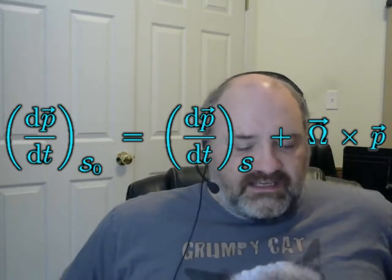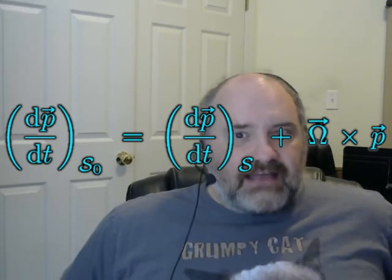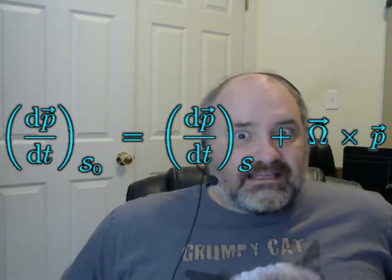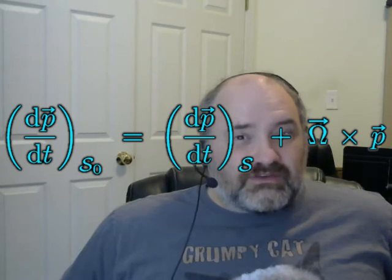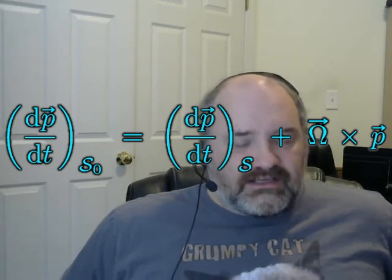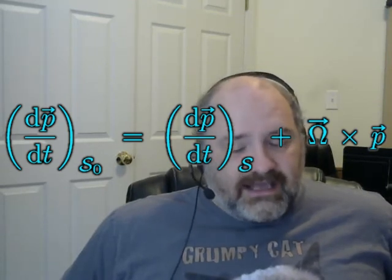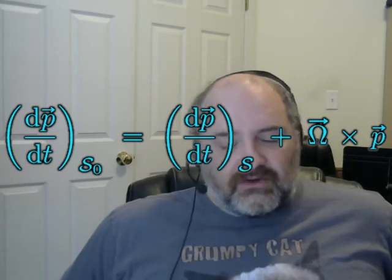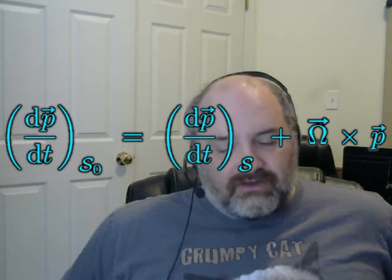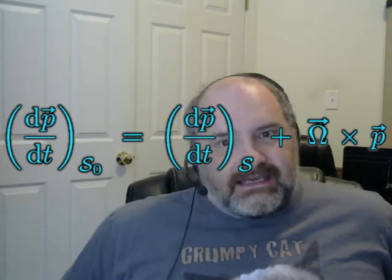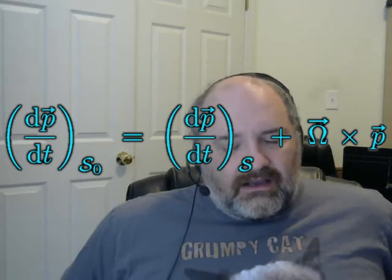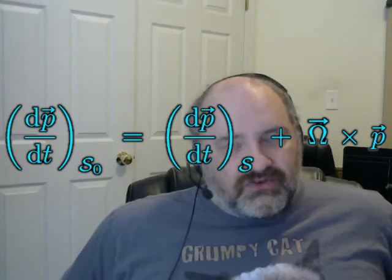On the right side, dP/dt sub S. That is if you measure dP/dt in the rotating reference frame. So you're going to get a different derivative because you're measuring it relative to accelerating axes, relative to rotating axes. So because you get how different is the derivative, that's what the omega cross Q term is. In this case, it's an omega cross P.